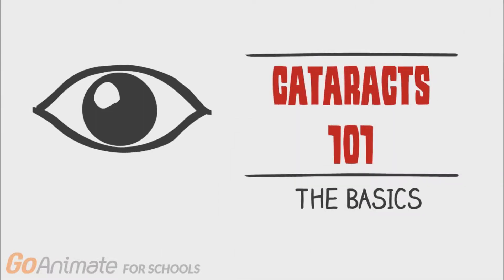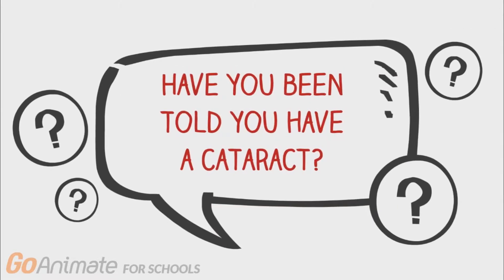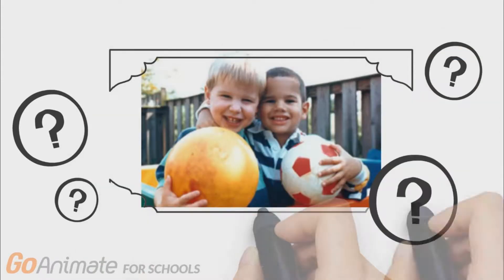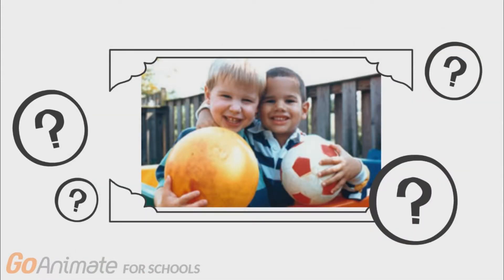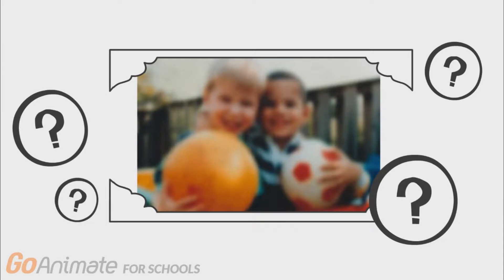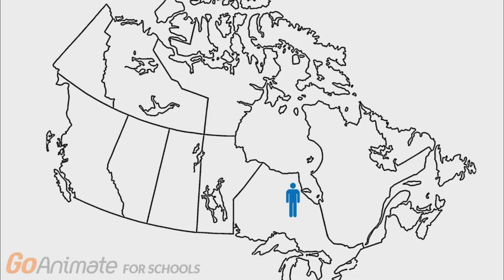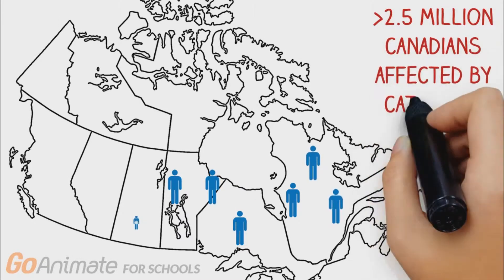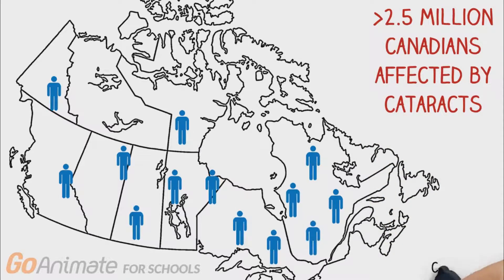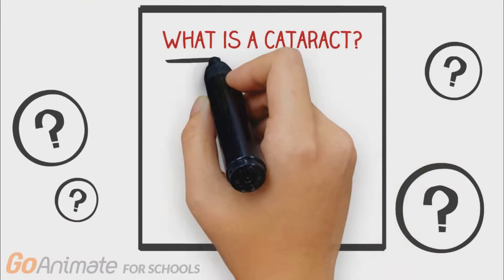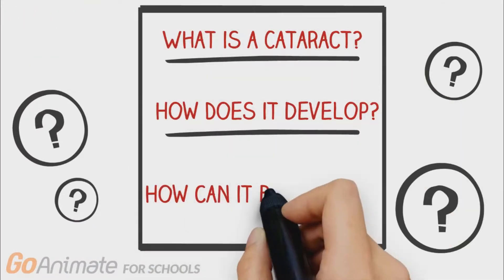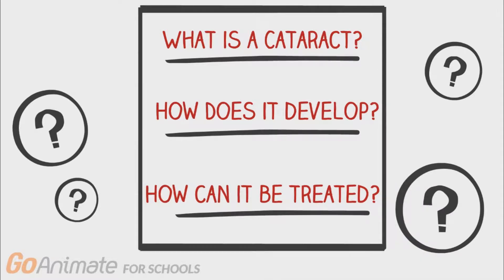Cataracts 101: the basics. Has your doctor told you that you have a cataract? Did you used to be able to see images clearly, but now that you're older, it looks something more like that? Well, you're not alone in this. More than 2.5 million Canadians are affected by cataracts. You probably have a lot of questions about what a cataract is, how it develops, and how it can be treated. You've come to the right place because we'll be discussing this plus more in the rest of the video.